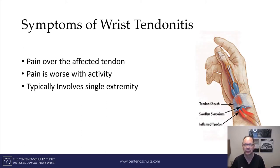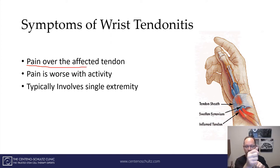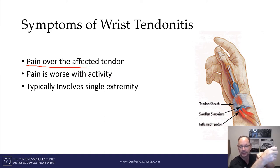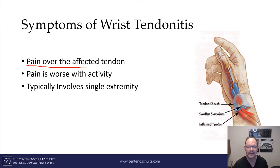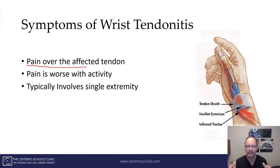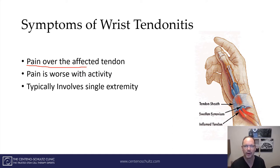The symptoms associated with tendonitis are typically pain over the affected tendon, so they're quite specific — right along the tendon. It's pain that is typically worse with activity. Equally important is that it usually involves only one wrist; it's unlikely to be in both wrists. So tendonitis is an inflammation of the tendon causing pain, typically worse with activity, involving only one joint.